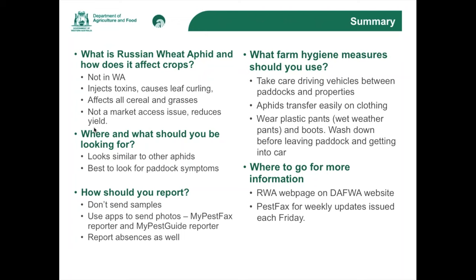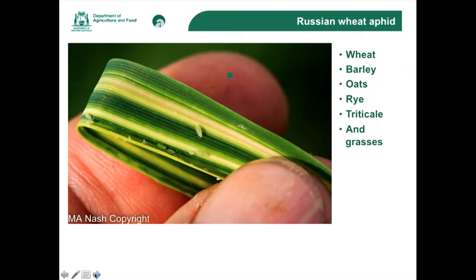Here's a picture of the symptoms caused by Russian wheat aphid — you can see some nymphs there. Firstly, it's quite a slender aphid and a little bit smaller than the oat and corn aphid. This picture came from Michael Nash in South Australia. You can see the symptoms actually look a lot like wheat streak mosaic virus. Symptoms are one thing we can use as an indicator, but with early infestations these symptoms will be less pronounced. Certainly we can use these when we look through fields.